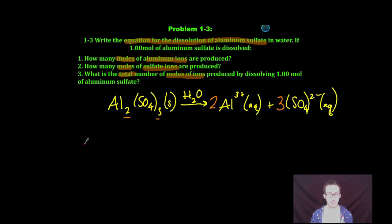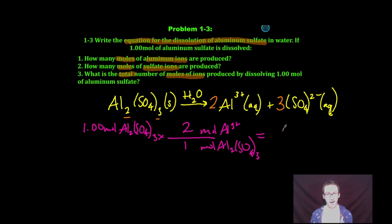Now, you may not need this to be spelled out for you, but I'm going to do it because sometimes you're going to have not just 1 mole, you're going to have something that's a little more difficult. So if I had 1.00 moles of aluminum sulfate, for every mole of aluminum sulfate, I'm going to get 2 moles of aluminum ions. So for every 1 mole of aluminum sulfate that is dissolved, I'm going to get 2 moles of aluminum ions. Boom, that answers question number 1.